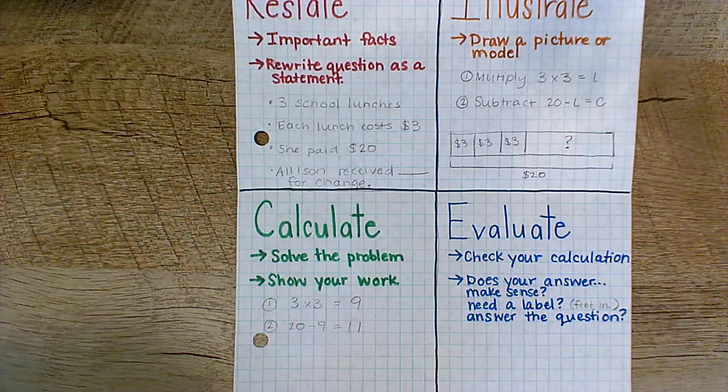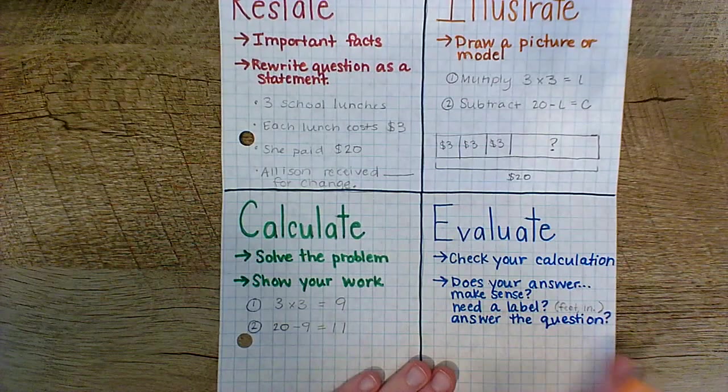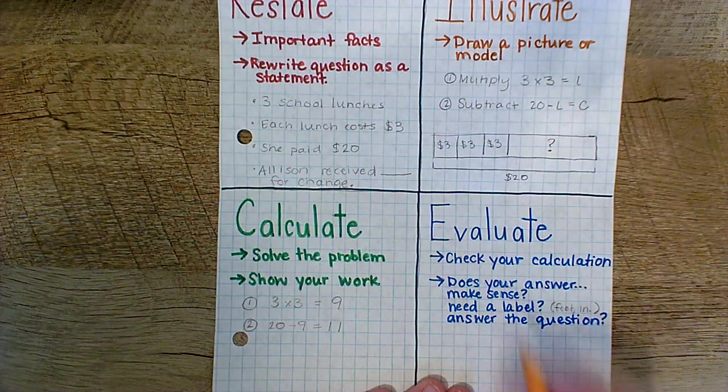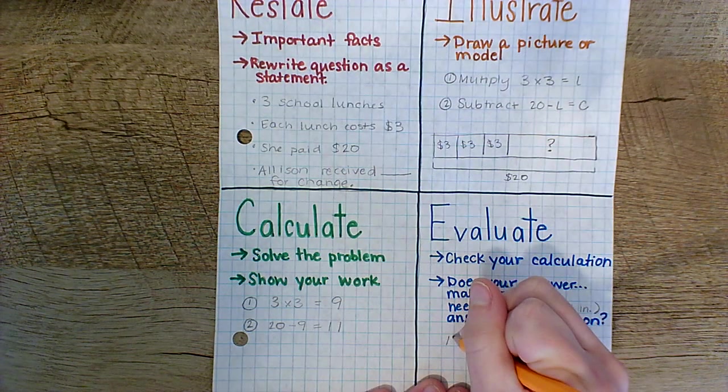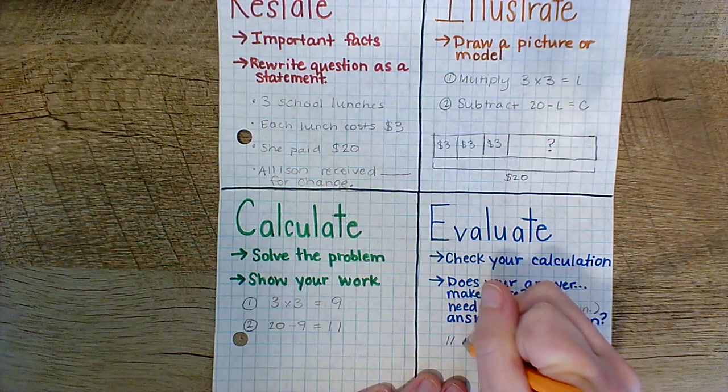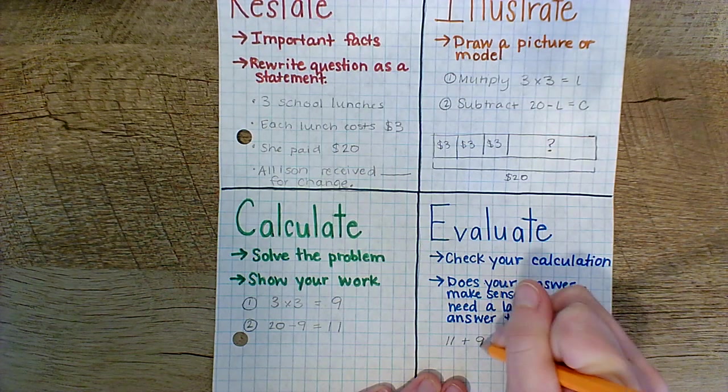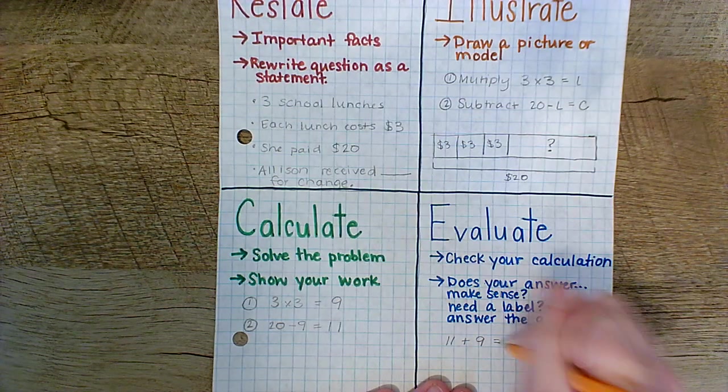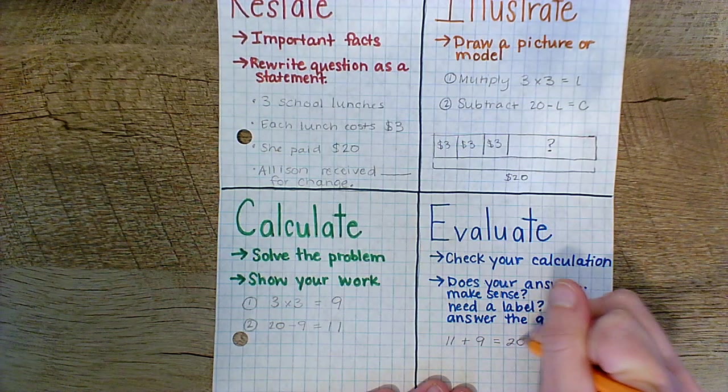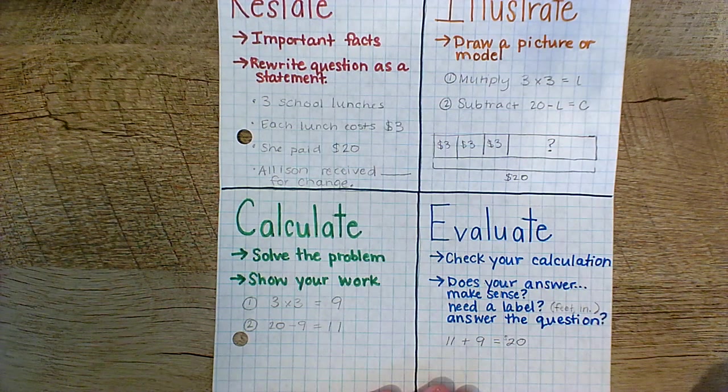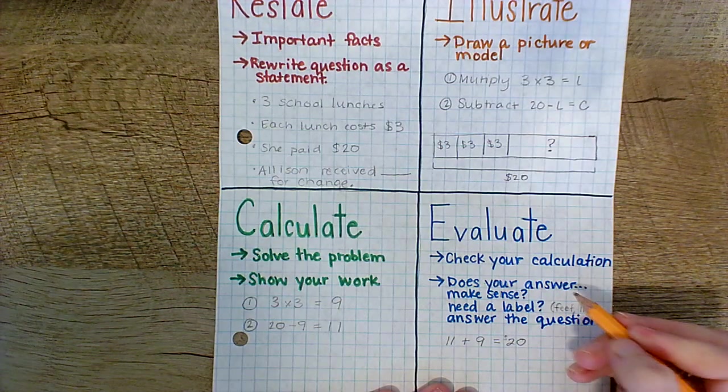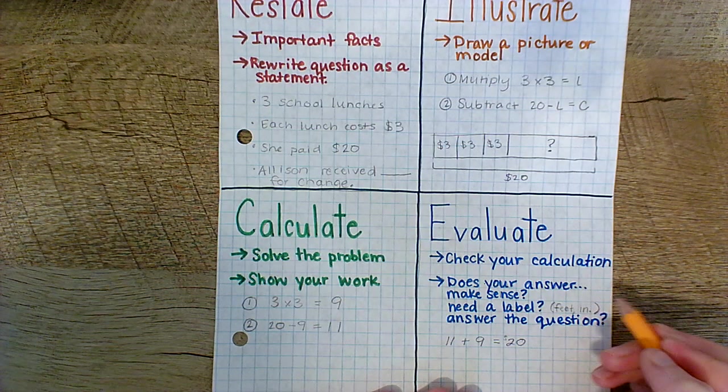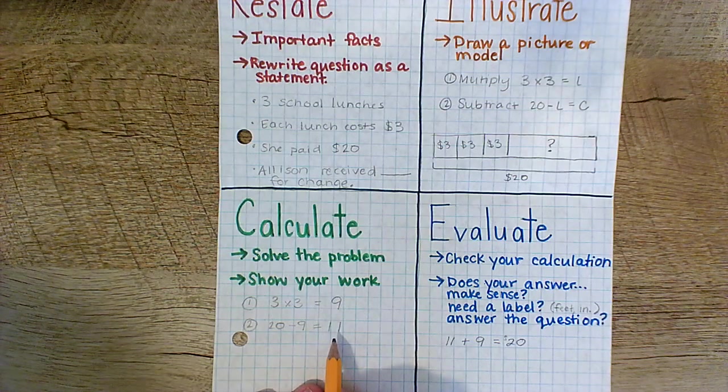But let me go to evaluate. Let's check our calculation. So what we can do when we check our calculation is to work backwards. So if I say, oh, she's going to get eleven dollars of change and we add it to the nine dollars she spent on her lunches, we do get back to a total of twenty dollars that she paid the cashier. So let's think now, does our answer make sense? It does make sense because eleven is less than twenty. So it makes sense to be changed that she could get back.